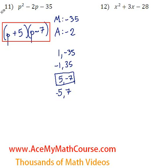Great, how about 12? So here we have x squared plus 3x minus 28. We're looking for two numbers that multiply to negative 28 and add up to 3.